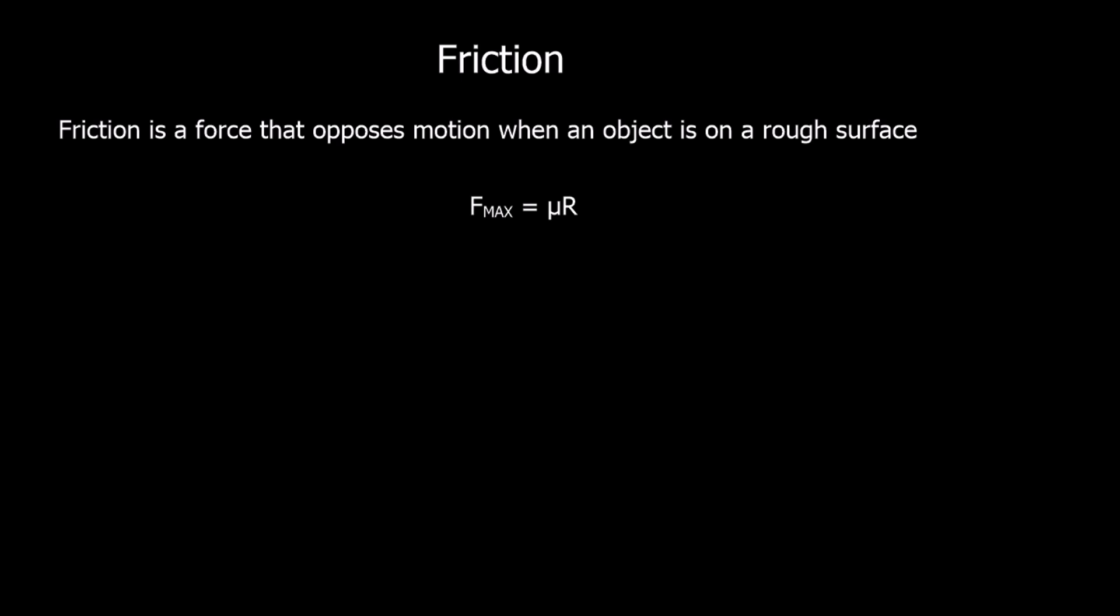This video is about friction. Friction is a force that opposes motion. The frictional force is never going to cause motion; it will only oppose the motion caused by another force. Friction occurs when an object is on a rough surface. If we have a smooth surface, there is no friction.